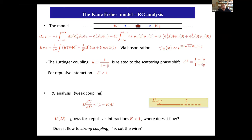Let me start discussing the Kane-Fisher model. As I said, it consists of a kinetic term with right-left moving linear spectrum, a density-density interaction that totally destroys the fermionic spectrum, and an impurity that scatters left to right. The Kane-Fisher model can be bosonized: the bulk term looks like free fermions, and the impurity looks like a cosine of φ at zero, where φ is the bosonic field describing the system. This relation between the two Hamiltonians is exact, given by bosonization.